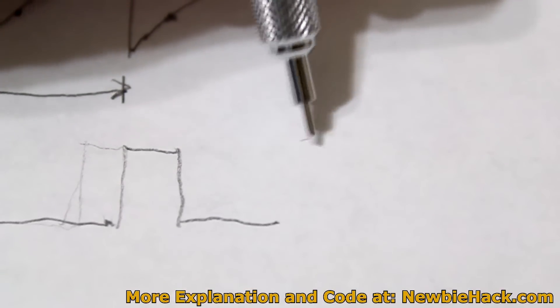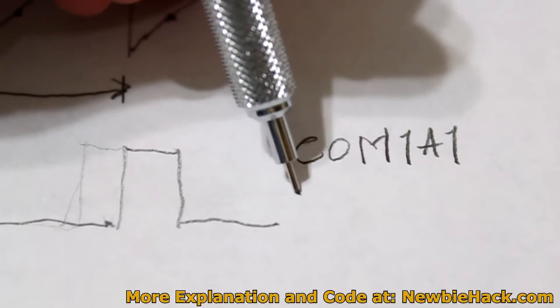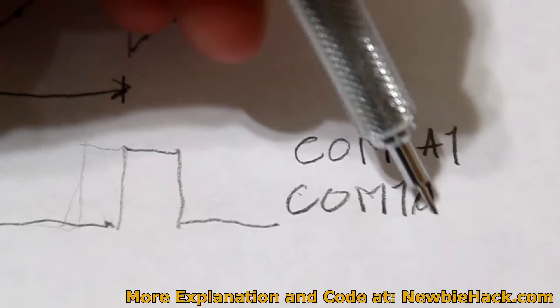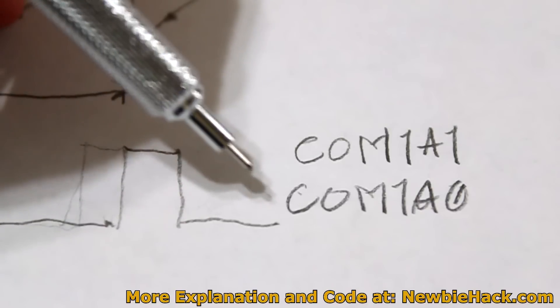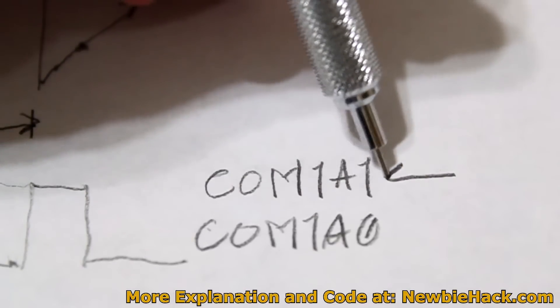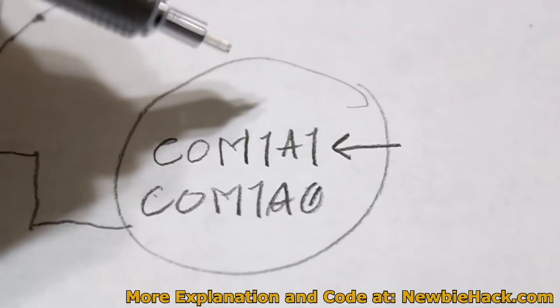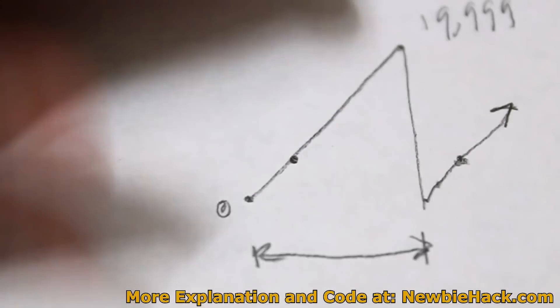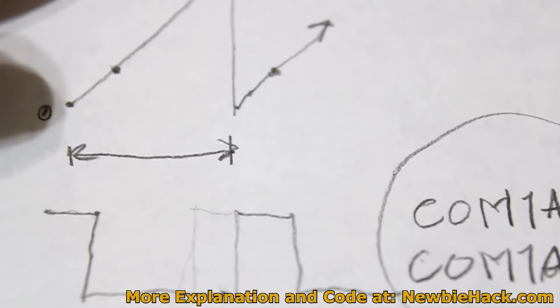The two bits that we would have to set are the COM1A1 and COM1A0. And if we wanted to set both of these, this would be inverted mode. But since we want non-inverted mode, we want to do it this way, starting from the top and then going down, we would only set the COM1A1 bit. So let's make these changes in the program and also setting the new OCR value and see if we can make the server operate.